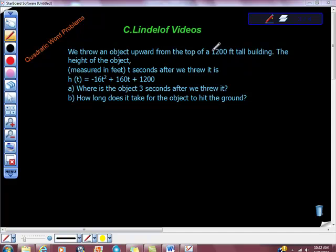We throw an object upward from the top of a 1200 foot tall building. The height of the object, measured in feet, t seconds after we threw it, is h(t) = -16t² + 160t + 1200.